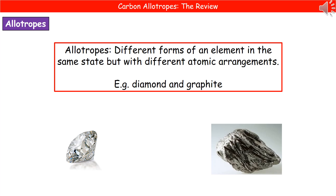A good example would be the carbon allotropes of diamond and graphite. They're both carbon in the solid state, but the arrangement of those carbon atoms is different, which gives them very different properties.